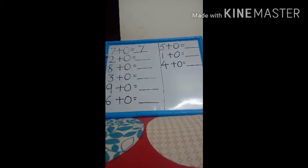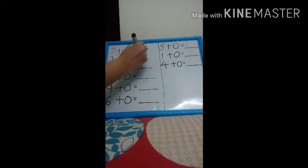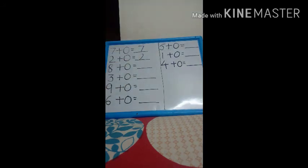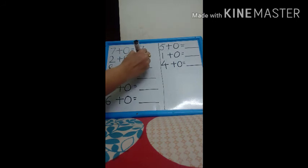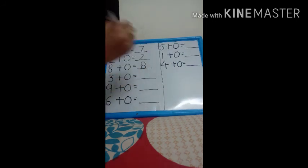Now, next. Two plus zero. Do you think that I have to draw the line and tell you? No, because it is so easy. Two plus zero, two. Like this. Eight plus zero, eight.